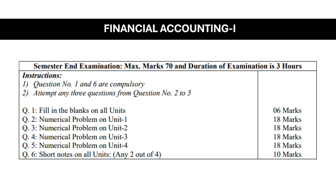The last question is Question No. 6: short notes on all units. You have to solve any 2 out of 4, and that carries 10 marks — so 5 marks for each short note. This total paper stands for 70 marks with a duration of 3 hours. To recap: 6 questions total; Question No. 1 and No. 6 are compulsory; from Question No. 2, 3, 4, and 5, you have to solve any 3 questions.